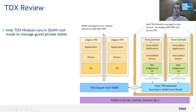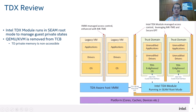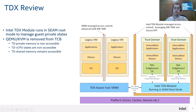TD guest is different from the traditional VM guest as it's isolated from KVM and QEMU — KVM and QEMU are removed from the TCB. For the TD private memory, it's not accessible to KVM and QEMU. The TD vCPU states are also non-accessible. There is usually some shared memory shared between TD and the hypervisor, which is accessible. For example, the guest driver may use bounce buffers, and this bounce buffer may be shared to QEMU to do device emulation.